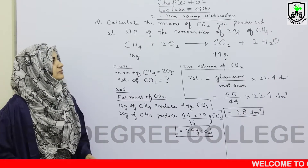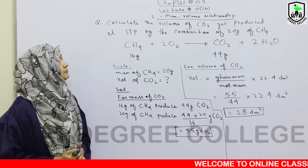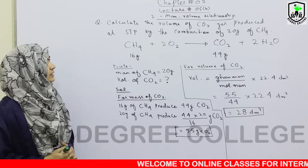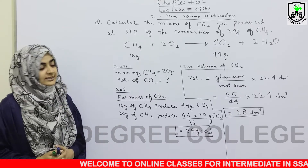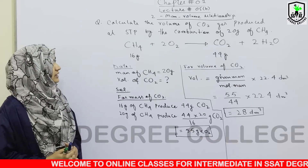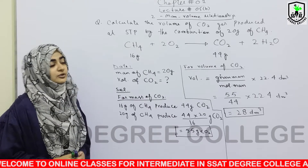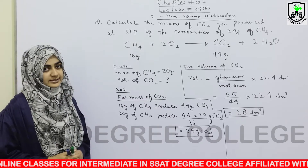Next example हमारे पास है from mass-volume relationship. Numerical है: calculate the volume of carbon dioxide gas produced at STP by the combustion of 20 grams of methane, CH4.